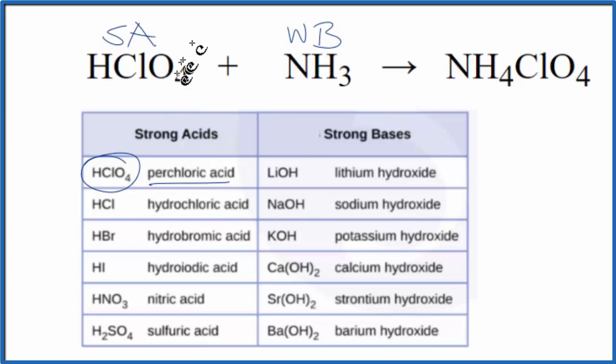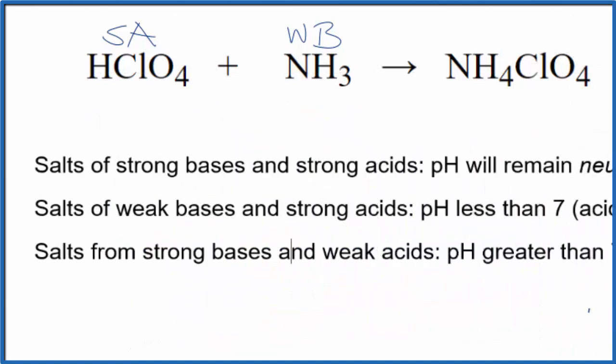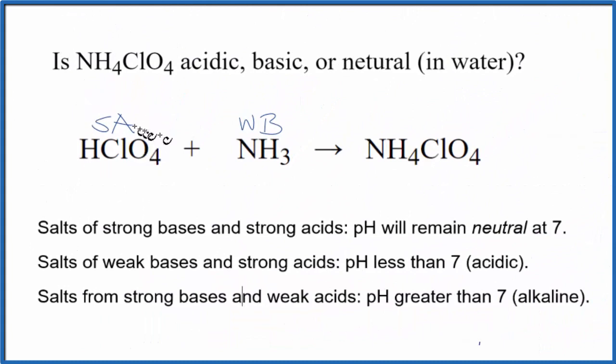Now we know the strength of the acid and the base. We can use the rules to figure out whether ammonium perchlorate is going to be acidic, basic, or neutral in water. So we're looking for a strong acid and a weak base. Here is a strong acid and a weak base.